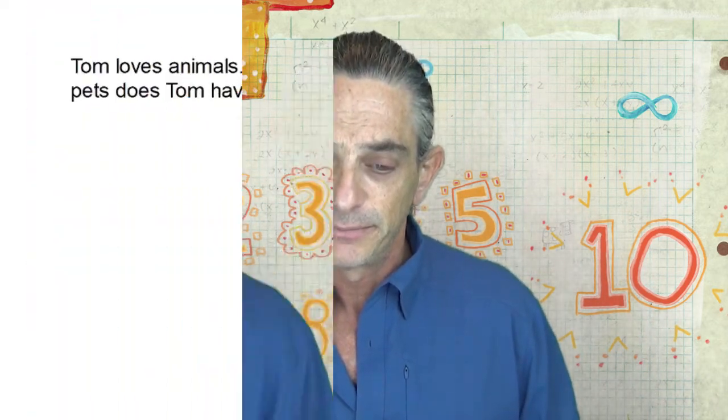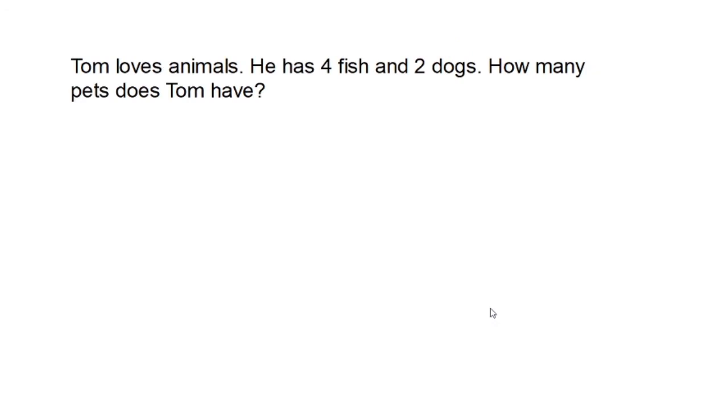Okay, so now let's see if you can use this acted out strategy to solve a couple of problems on your own. I'll introduce you to the problem. You hit pause. When you have the problem solved, hit play and we'll see how you did. It says Tom loves animals. He has four fish and two dogs. How many pets does Tom have? All right, hit pause. Solve this problem on your own using the acted out strategy. When you're done, hit play. I'll be here and we'll see how you did.